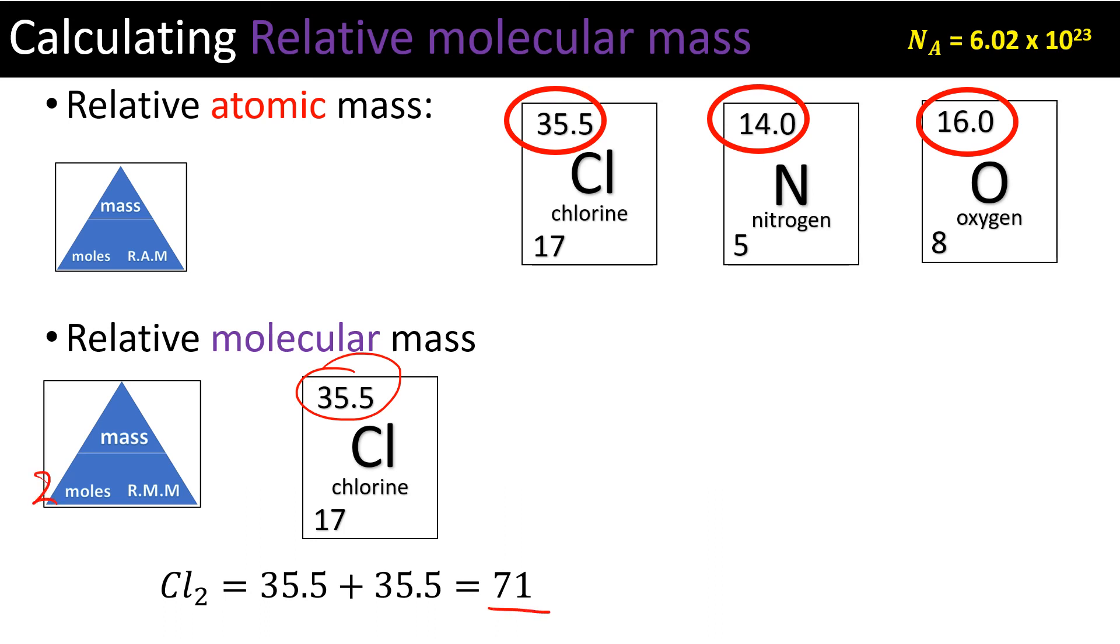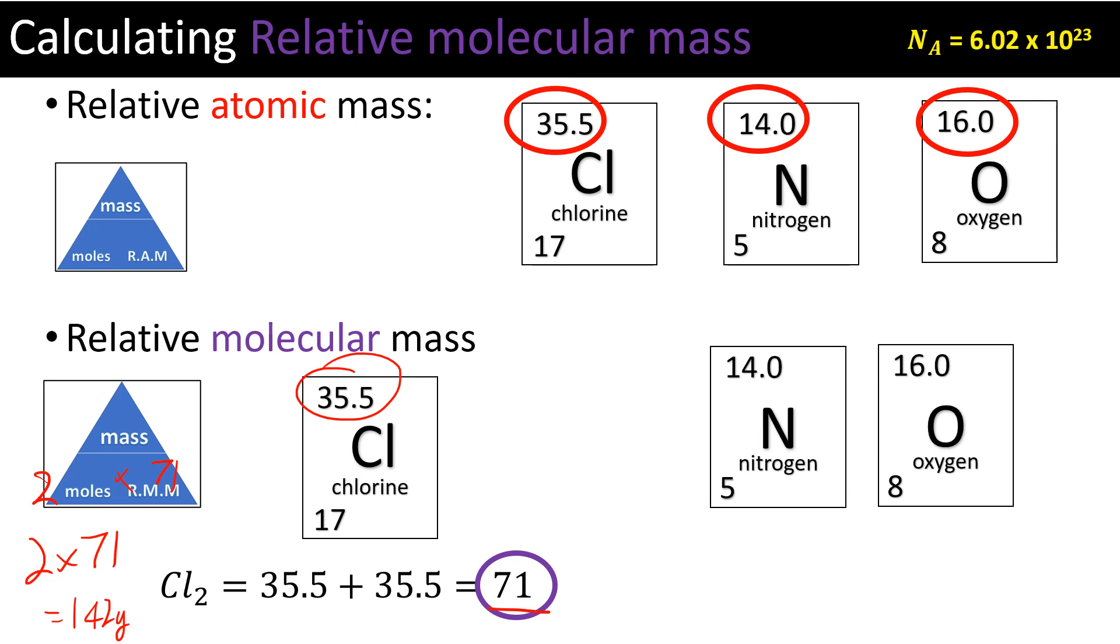So for example, two moles of chlorine gas would be two times 71, gives us 142 grams. Nitrogen and oxygen, which we mentioned at the top there—nitrogen dioxide, which is a pretty horrible pollutant. We've got one nitrogen, two oxygens, there they are. That gives us a relative molecular mass of 46. So if I have two moles of nitrogen dioxide, that would simply be two times 46, which would be 92 grams. Hope that makes a bit of sense.